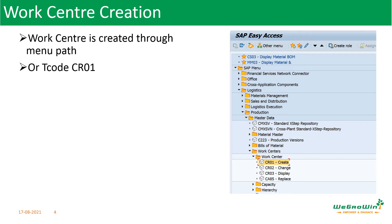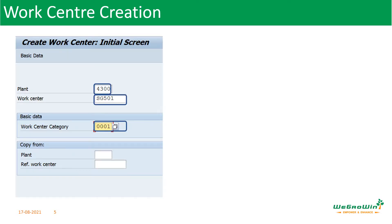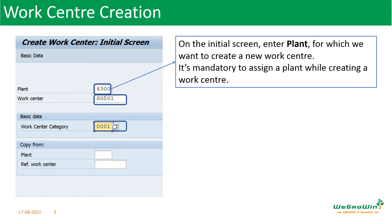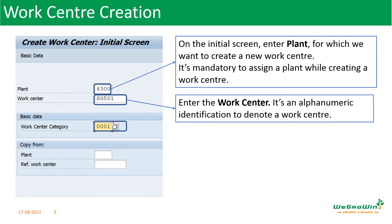How to create a work center? A work center is created through the menu path shown here or simply T-code CR01. After entering CR01, we go into the screen where we enter the plant — the plant where we want to create the work center. It is mandatory to assign the plant to each work center. Then we enter the work center name, which may be alphanumeric, such as HG501, 1234, or 123-1.